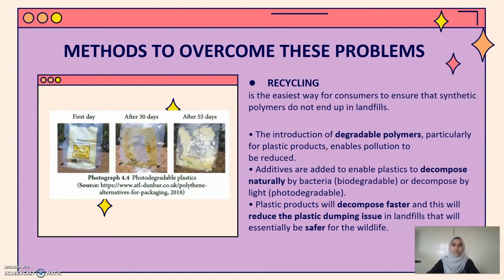There are methods to overcome this problem. The easiest way for consumers is by recycling. Recycling can ensure that discarded polymers do not end up in landfill. The introduction of degradable polymers, particularly for plastic products, enables pollution to be reduced. Additives are added to enable plastics to decompose naturally by bacteria or decompose by light, so plastic products will decompose faster and reduce the plastic dumping issue.